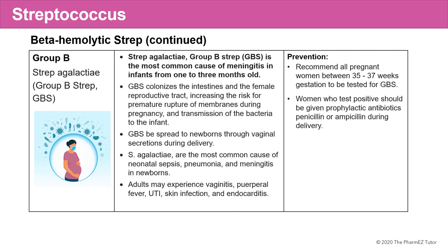The second beta-hemolytic strep is Group B Strep, or Strep agalactiae. Group B Strep is the most common cause of meningitis in infants from 1 to 3 months old. It colonizes the intestines and the female reproductive tract, and can be spread to newborns through vaginal secretions during delivery. Strep agalactiae is the most common cause of neonatal sepsis, pneumonia, and meningitis in newborns. It's recommended that all pregnant women between 35 to 37 weeks gestation be tested for GBS, and women who test positive should receive prophylactic penicillin or ampicillin during delivery.